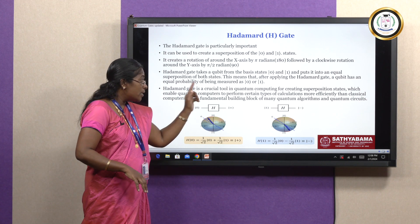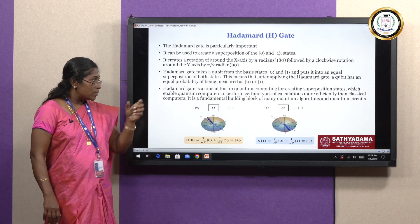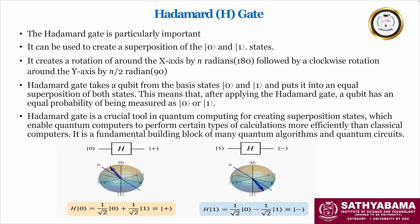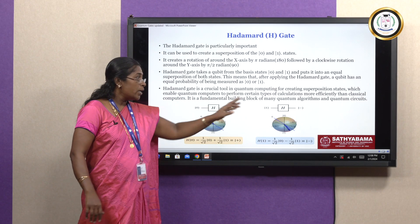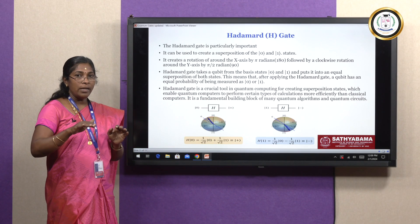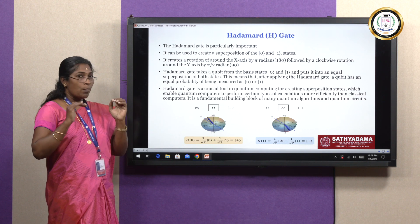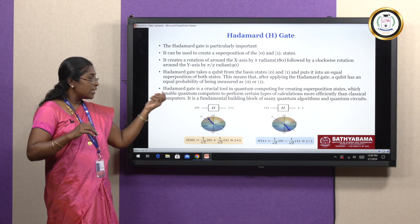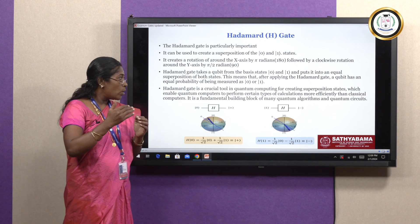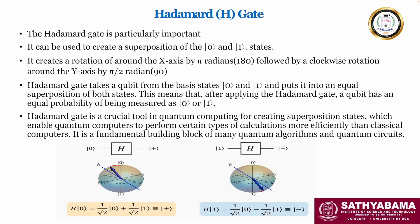The Hadamard gate is a crucial tool, and because of this superposition nature, quantum computing enables quantum computers to perform complex calculations in a better way. It is a fundamental building block for many quantum algorithms and quantum circuits. Even though Pauli X, Y, and Z gates are building blocks, the Hadamard gate plays a major or pivotal role because it represents the superposition state.